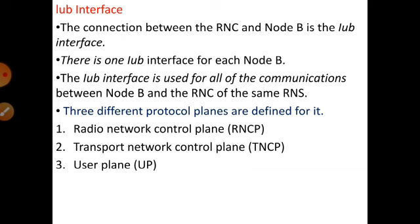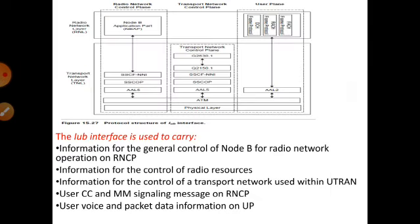Next we go to IUB interfaces. This IUB interface maintains a connection between RNC and Node B — there is only one IUB interface for each Node B station. We cannot use multiple IUB interfaces; each Node B station has one IUB interface. This IUB interface is used for all communications between RNC and Node B, but this RNC should belong to the same RNC. If the RNC does not belong to the same RNC, we cannot use this IUB interface. Similar to IU and IUR interfaces, the IUB interface also has three planes: RNCP, TNCP, and User Plane. The protocol structure of IUB is similar to previous diagrams but some protocols change.